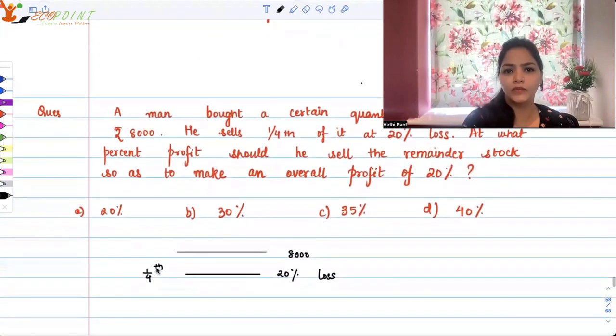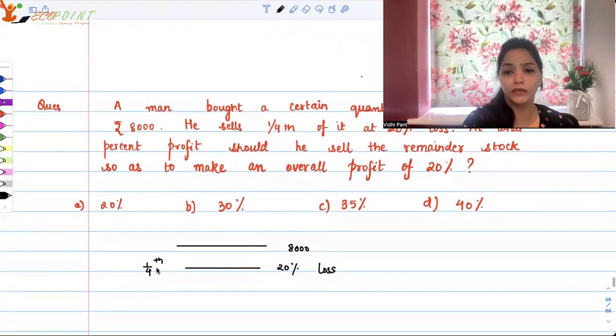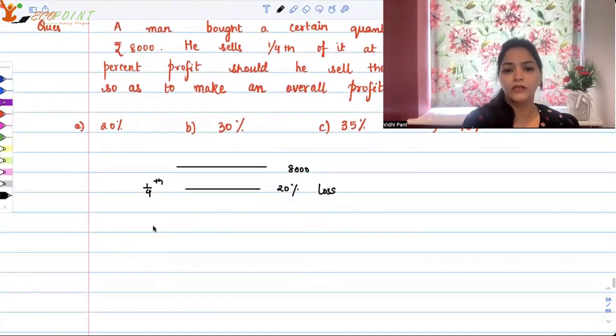At what percent profit should the remainder be sold? In order to make an overall profit, we need to make overall profit of 20%.